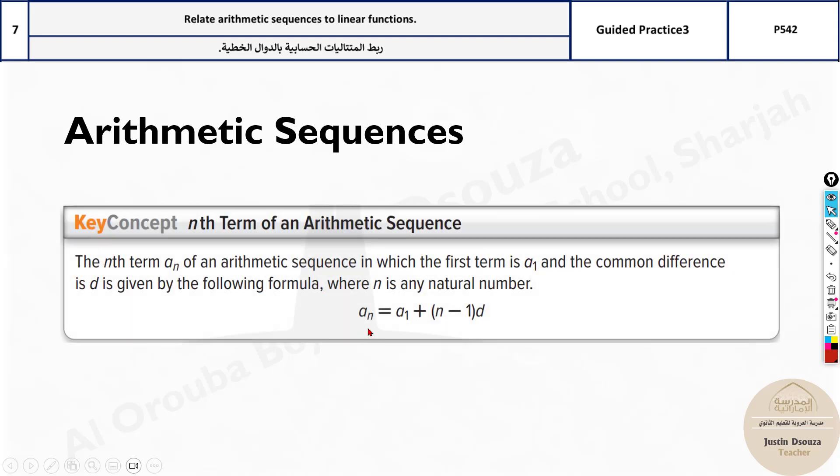The general formula is given as an equals a1 plus n minus 1 d, where a1 is the first term, d is the common difference, and n is the number of terms.